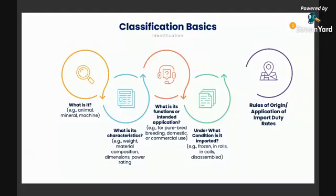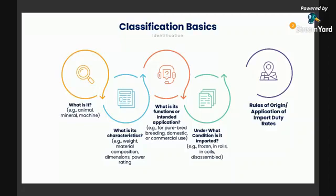After knowing the characteristics of the product, you then ask yourself what are the functions or intended application of this product. For example, is it for purebred breeding, for domestic, or for commercial use? This is common for live animals where the description provides either for breeding or not, and also for plants where the description specifies if seeds are for planting or for consumption. Although you already identified the description on the four-digit level, there are additional descriptions under the subheading level up to the eight-digit level.